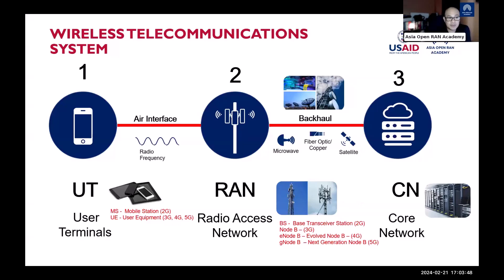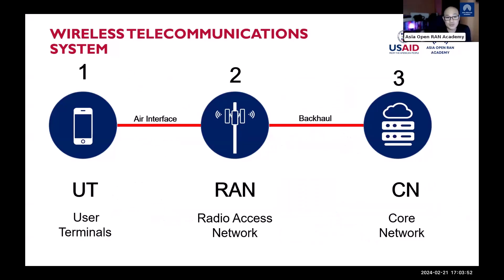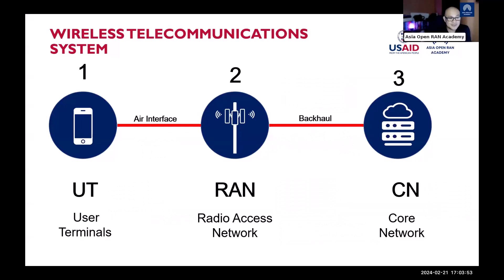Always remember the wireless telecommunication system as easy as one, two, and three: user terminals, radio access network, and the core network. Now let's move on to the air interface, where invisible connections link the user terminal and the radio access network.